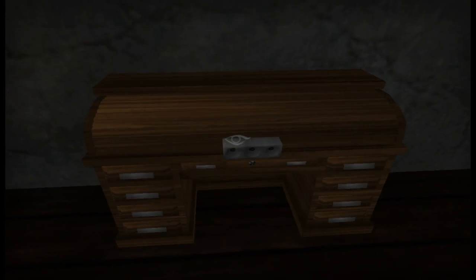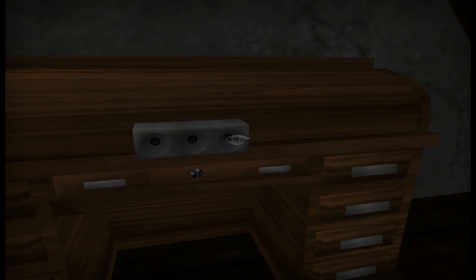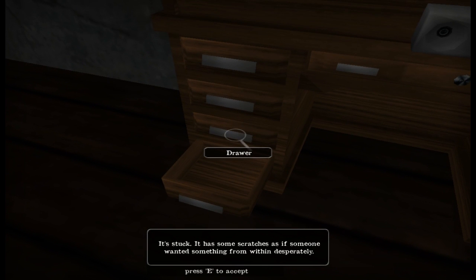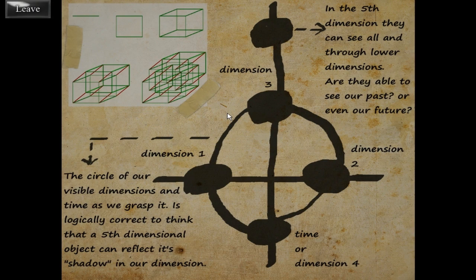A projector — turn on, turn off. Holy shimole, what is going on here? Turn that off, that is wow. What's going on here? Middle drawer — it needs a key, interesting. What the hell is this? It's weird. Open — nothing. It's struck, it has some scratches, like someone wanted something from within desperately. Interesting. Dimension scheme — holy crap! 'Dimension three and the fifth dimension — they can see all through lower dimensions. Are they able to see our past or even our future? Dimension two, dimension one. The circle of our visible dimensions and time as we grasp it — it is logically correct to think that a fifth-dimension object can reflect its shadow in our dimension.' Wow, this is trippy.